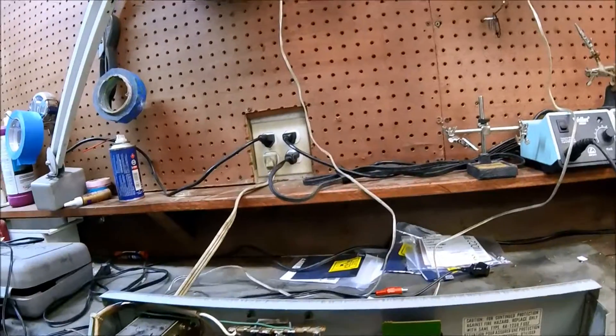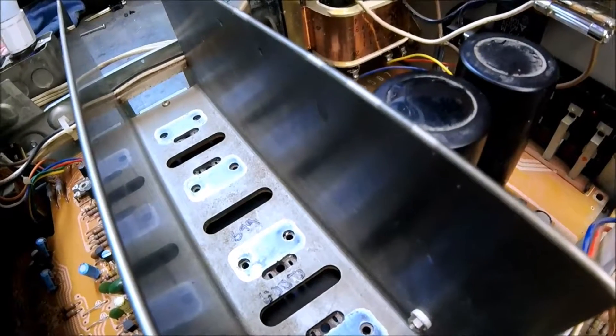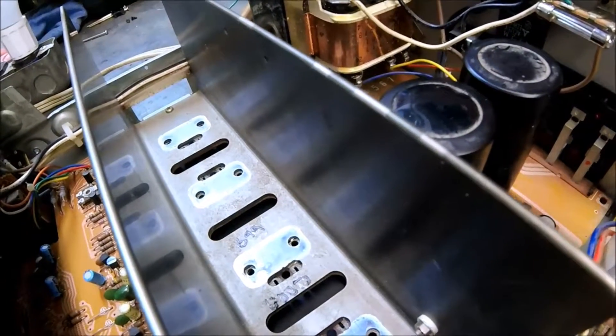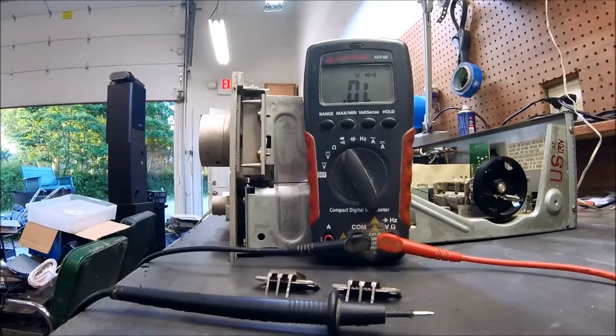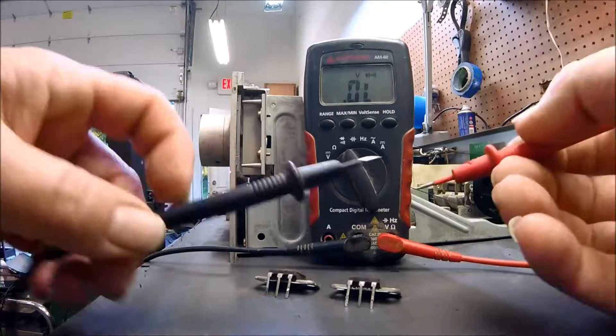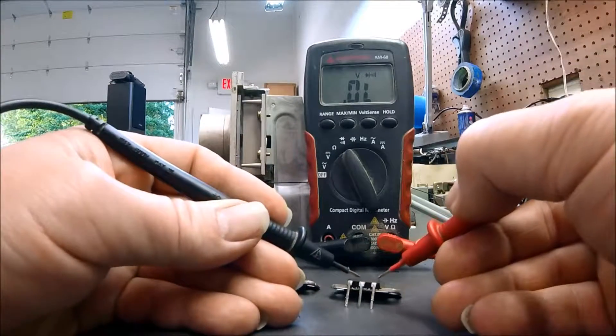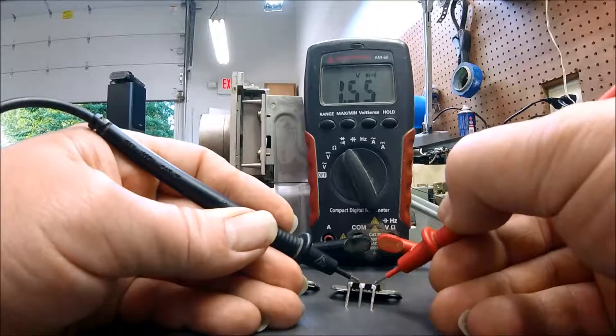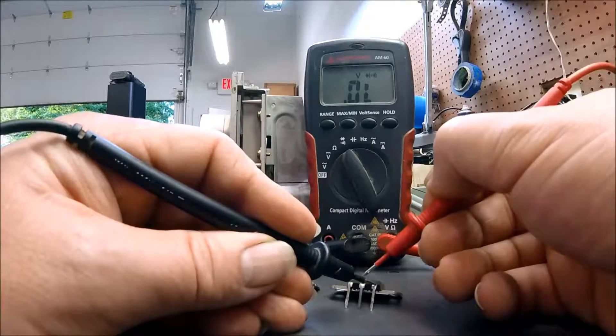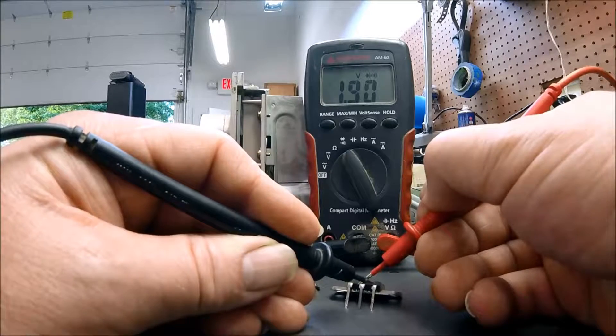I went directly to the output transistors and removed them from circuit and found one that's bad, and I'll show you here. It doesn't seem like a direct short, but it's kind of strange the way when I touch these probes on here, it's got a bit of a delay sometimes. But there, you want 1.5 volts in diode mode and I switch and I get like 1.9 that way.